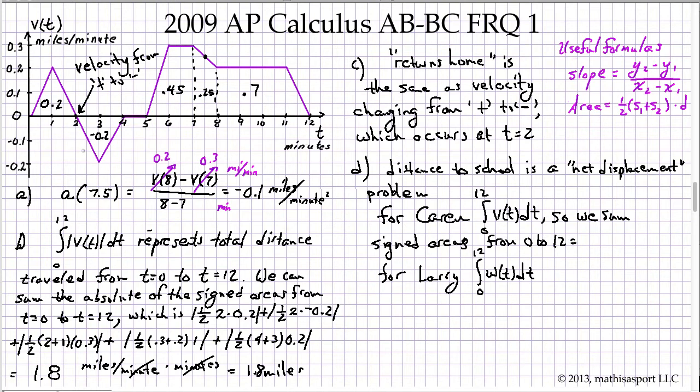We're going to get 0.2, negative 0.2, 0.45, 0.25, and 0.7, and that gives 1.4 miles. For Larry, we're going to evaluate this numerically, so let's go to the calculator.